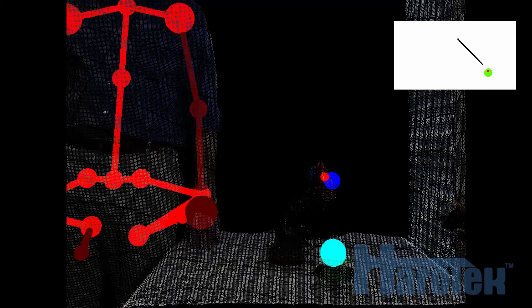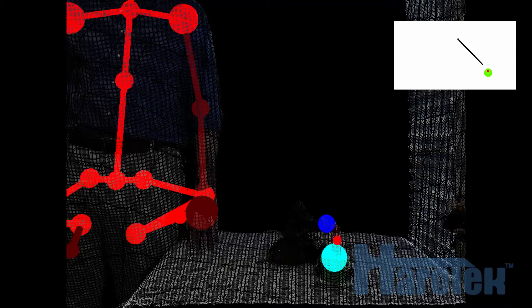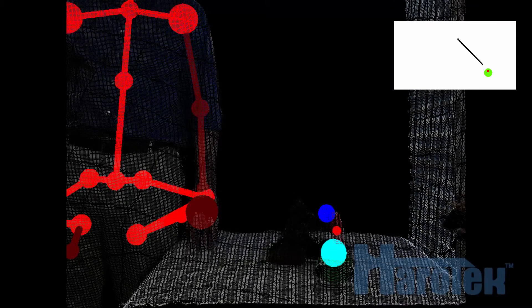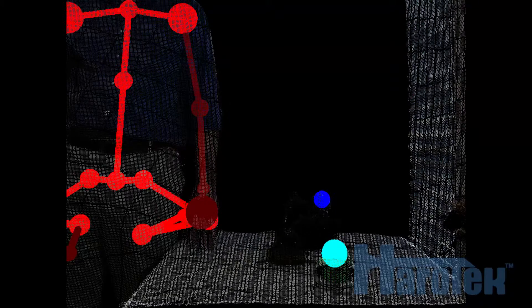Notice that the Kinect is incorrectly interpreting the positions of the legs of the human, because they are obstructed by the table. The Kinect nonetheless recognizes the human and correctly interprets the position of the hand.